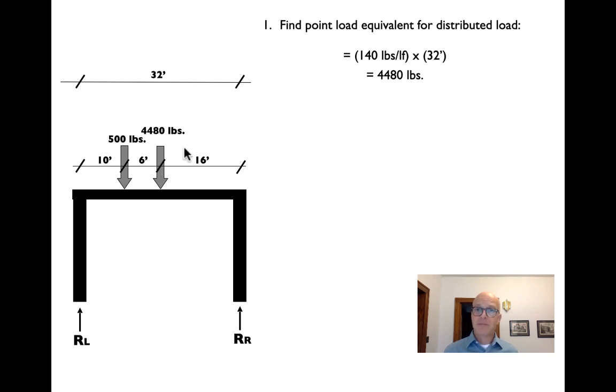So we have found a point load equivalent for that distributed load, 4480 pounds. If we go back to our pier example, remember we also had a point load of 500 pounds acting 10 feet away from the edge. So now we have two point loads and we're going to again try to find the reaction left and the reaction right, the two reactions that would stabilize the beam under this loading condition.